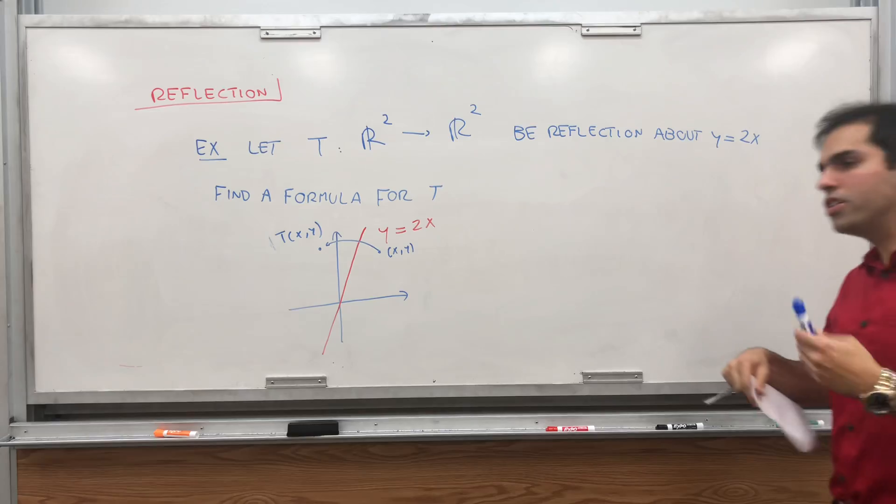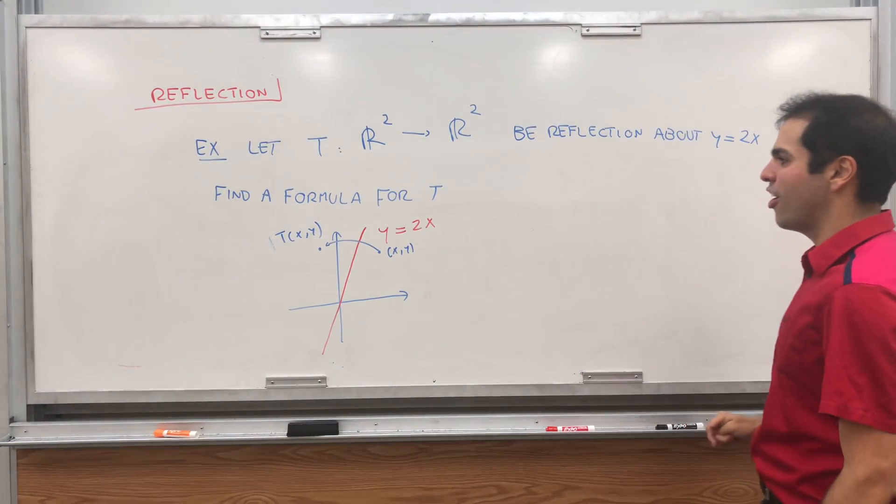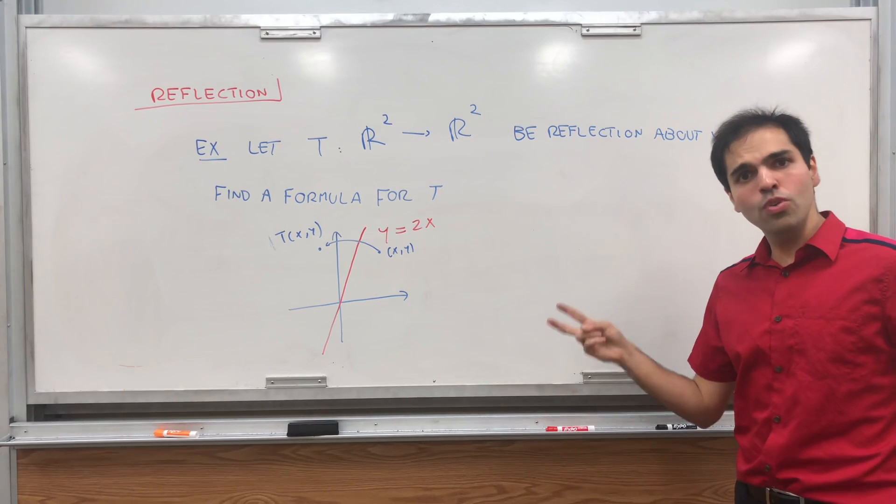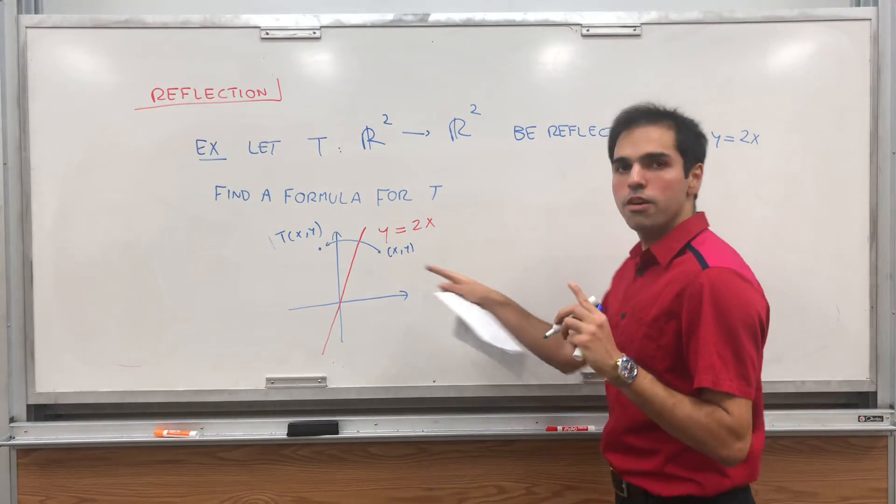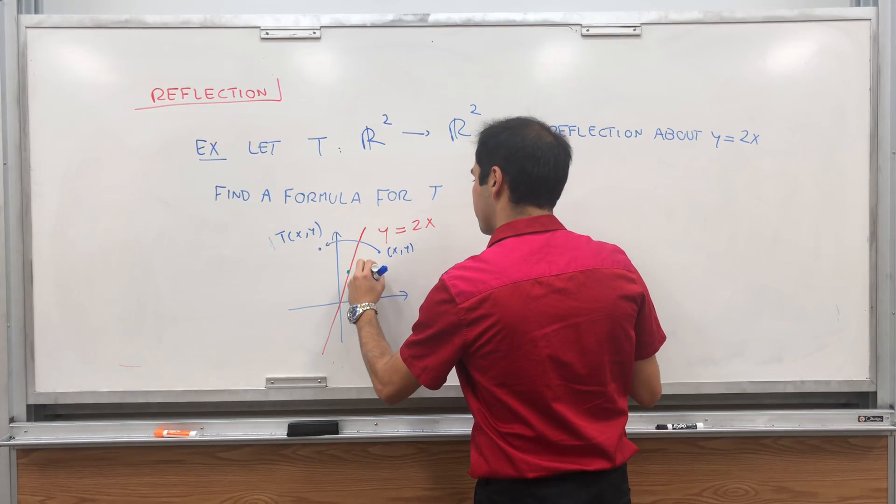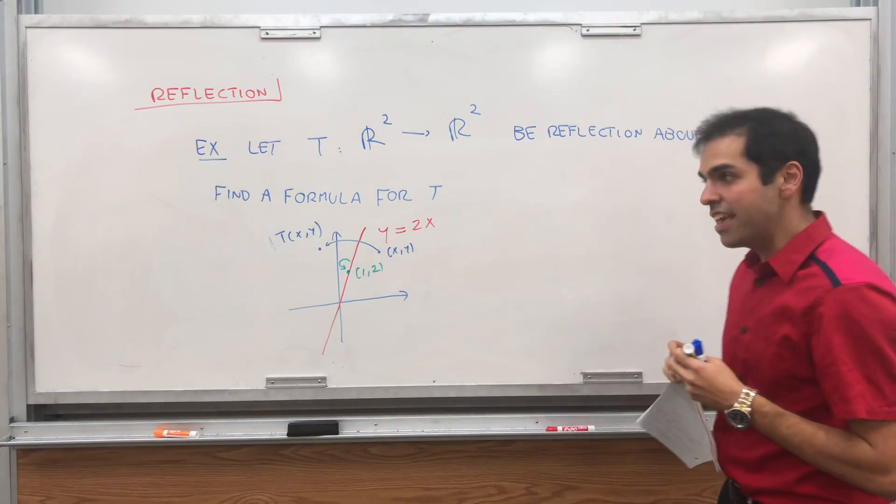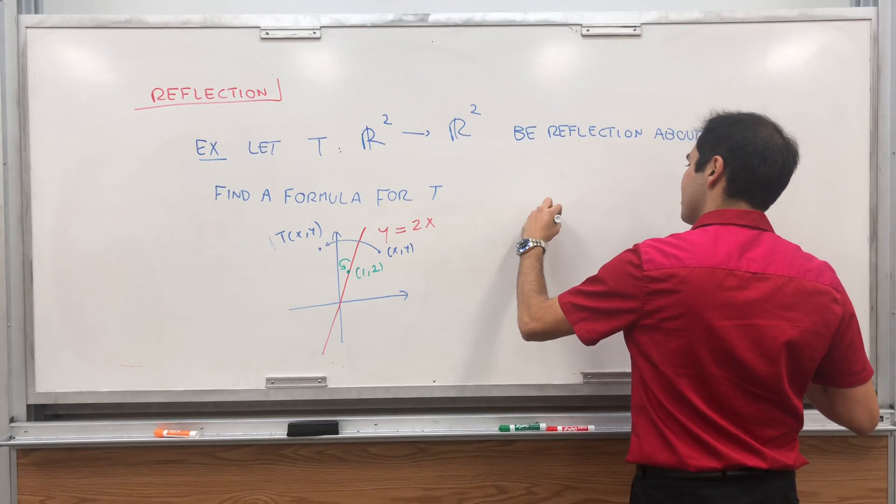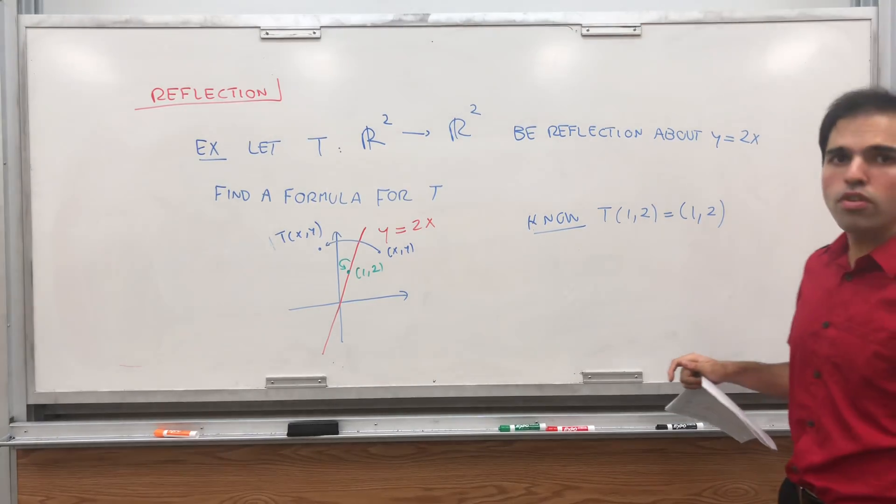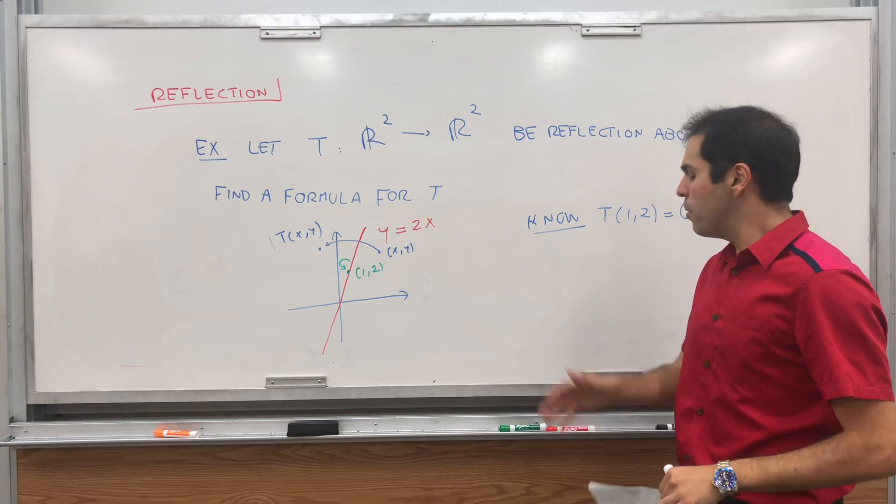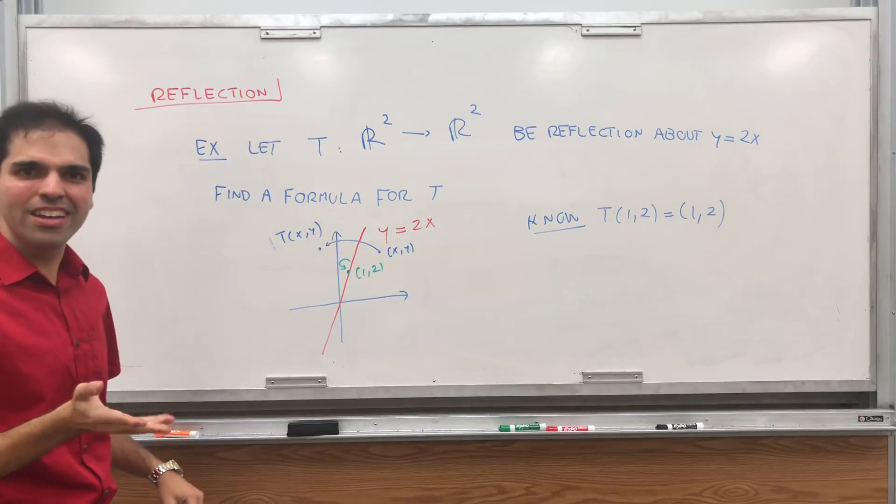All right. Now, you know in linear algebra, usually to find T, it's enough to find T of (1,0) and T of (0,1). But here it's actually super hard to find. And in fact, not quite obvious. But the point is we actually know two other points that are pretty obvious to figure out what T does. First of all, suppose you have a point on this axis, on this line. Let's say the point (1,2). Then we know what T does to that point.